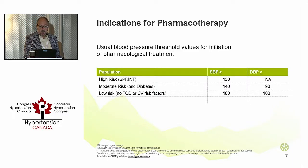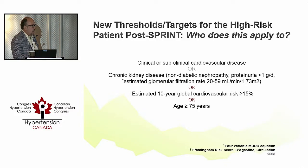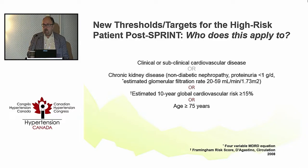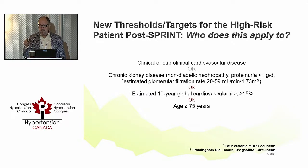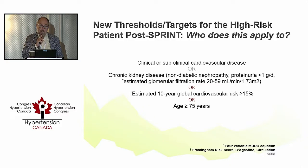She falls into the 27-28% of SPRINT patients who were over the age of 75. As Dr. Rabi pointed out, she is in that category — age greater than 75 — which qualifies her as a high-risk patient with a threshold for initiating therapy of 130 mmHg and a target based on AOBP of 120. For those who don't use AOBP, the number I typically suggest is up to 10 mmHg higher than that as your target.